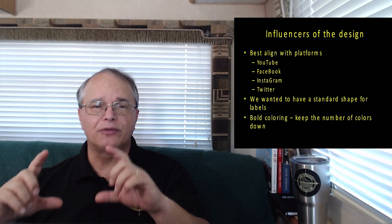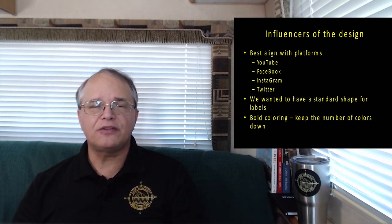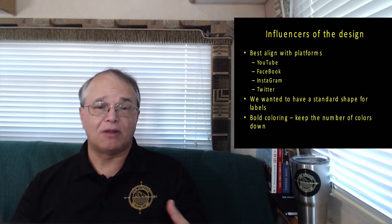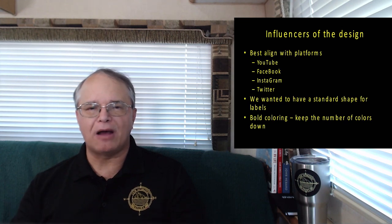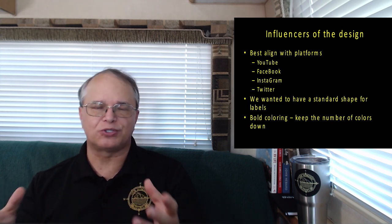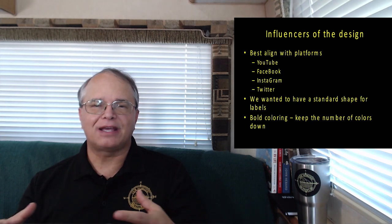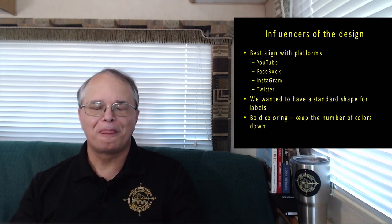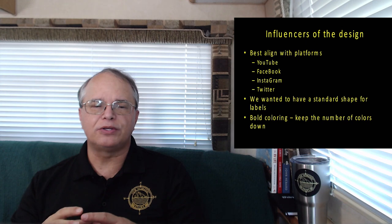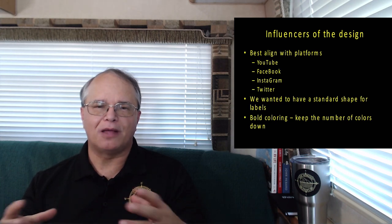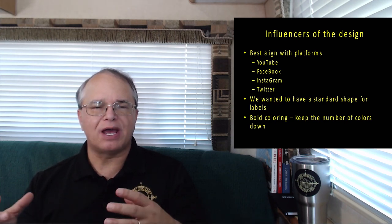We realized quickly that those platforms use a round profile picture, so whatever logo we came up with we wanted to make sure it would fit in that circle. The second thing we considered is that in the RV and nomad community, stickers and labels are pretty important. If we picked a logo that fit a standard shape — circle, square, or rectangle — it could be printed in a more cost-effective manner. The third thing was using bold colors to separate what we're doing from others.